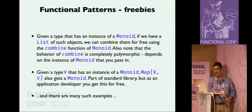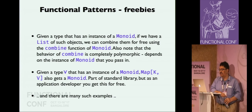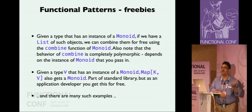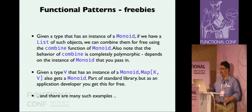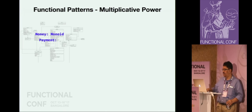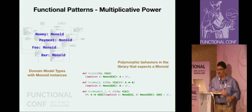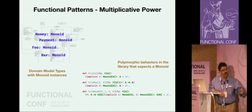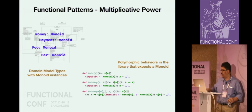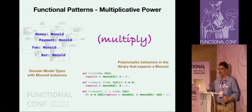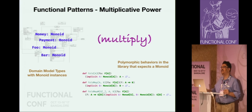With functional patterns you get multiplicative power. For example, if you have a data type with a monoid instance and you use it as the value of a map, then that map becomes a monoid. So map of K and V, if you have an instance of monoid for V, then map of K and V becomes a monoid. These functions from standard libraries only depend on the algebra, so you get a multiplicative combinatorial explosion - you can combine your application-specific data types with these functions.